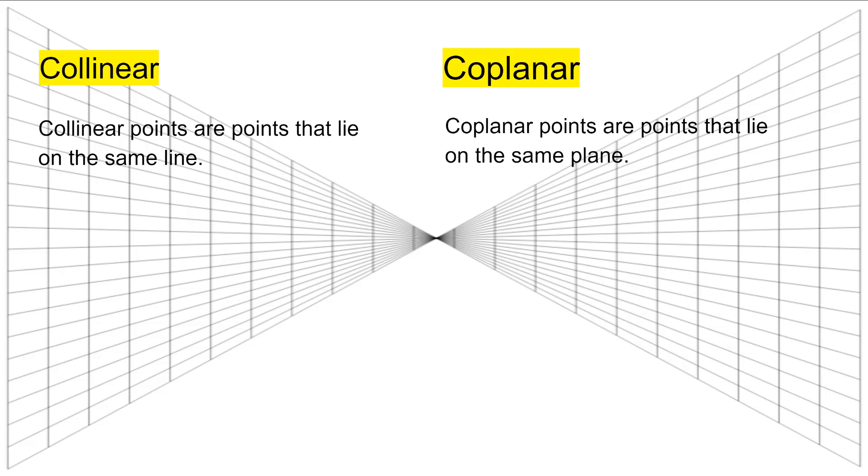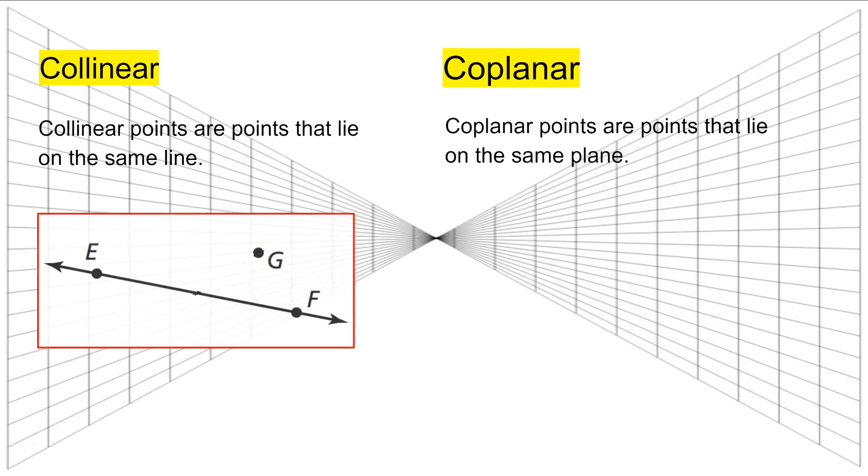Collinear points are points that lie on the same line. Which points in this diagram are collinear? E and F are collinear. They lie on the same line. G does not lie on the line that E and F are on.